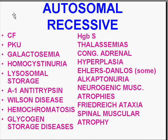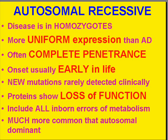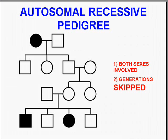When you get to know these diseases and how they're expressed, you'll be able to see that they have characteristics classical for autosomal recessive. The pedigree can skip generations, and of course both sexes are involved because it's autosomal and not X-linked. Except for the fact that generations can be skipped, this is pretty much identical to the autosomal dominant pedigree — the affected patient is filled in black, with females shown as circles and males as squares.